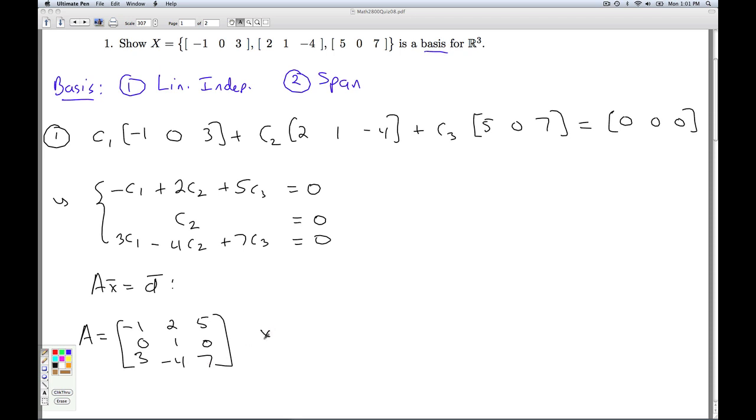The unknown matrix X is [c₁, c₂, c₃], because those are my unknowns. And the matrix D is just the zero column matrix.